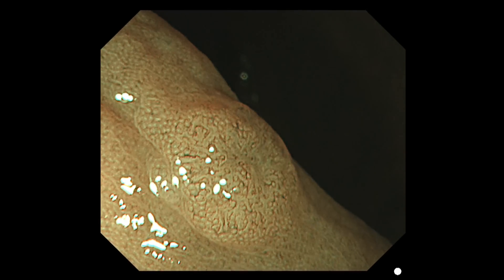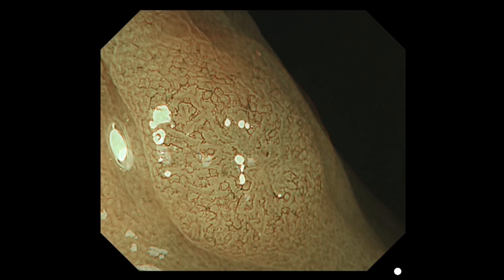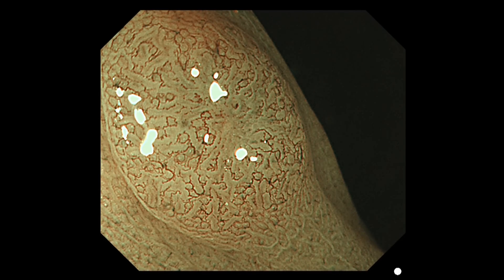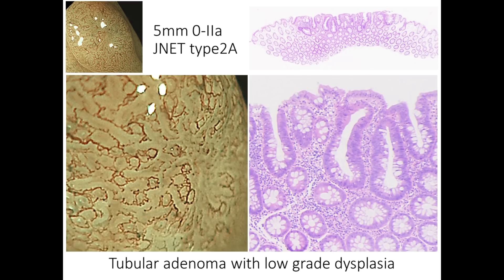This slightly elevated polyp, 5 mm in diameter, has a shallow central depression, also called valley sign. We don't classify this as a depressed Type 2c because the depression has a wavy patterned edge and doesn't fall sharply. By zooming in on this lesion, well-ordered reticular or spiral vessels with a regular surface pattern can be observed in the large portion of the polyp, so it is classified as J-Net Type 2A. Endoscopists should not confuse the unclear vessel appearance at the central depression with J-Net Type 2B or 3. This polyp was resected by cold-snare polypectomy, and the histological finding was tubular adenoma with low-grade dysplasia.